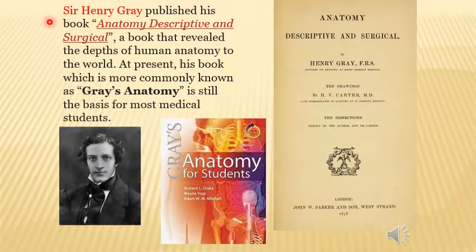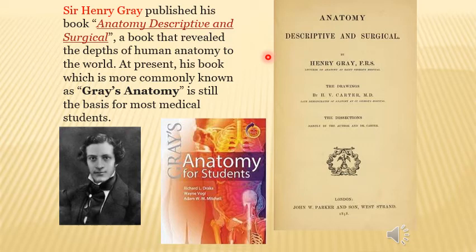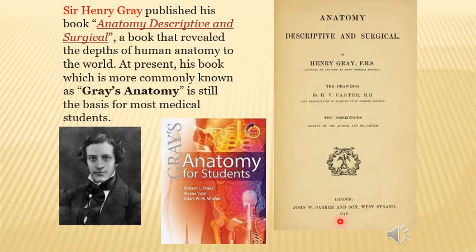Sir Henry Gray was a renowned anatomist who published the first great anatomical book, followed like the Bible for anatomy. First published in 1858 as 'Anatomy Descriptive and Surgical,' it revealed the depths of human anatomy region-wise and system-wise. It is known as Gray's Anatomy, and has since been modified, condensed, and updated to become Gray's Anatomy for Students.